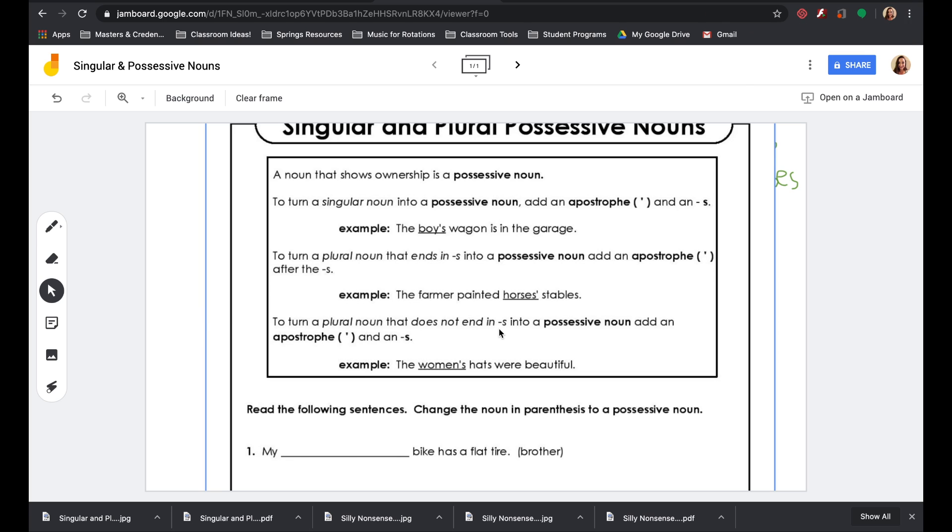To turn a plural noun that does not end in S into a possessive noun, add an apostrophe and an S. An example: the women's hats were beautiful. More than one woman, more than one hat. They put an apostrophe and then an S. This is plural because if it wasn't plural, it would say woman with an A, but it has an E. That's more than one woman, and that's women. That's a plural word, but we still add an apostrophe and an S after the apostrophe because this does not end in an S.